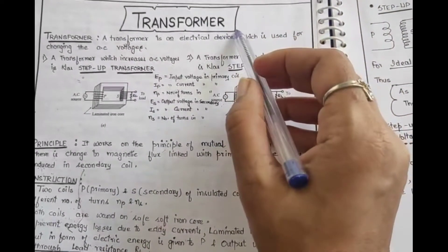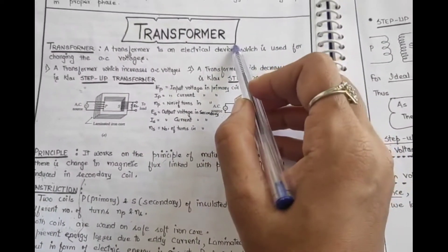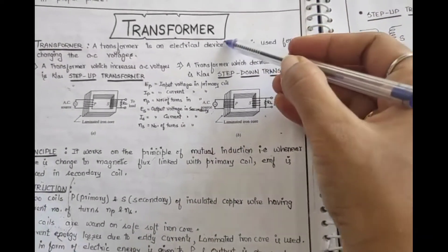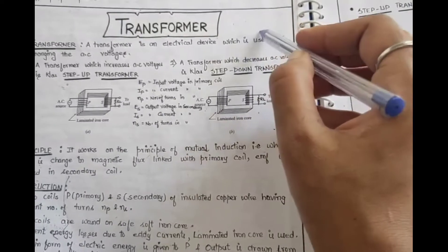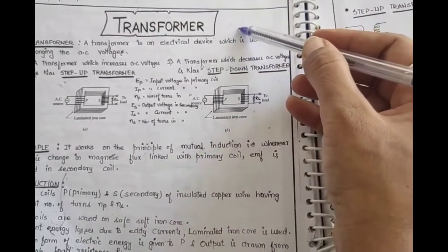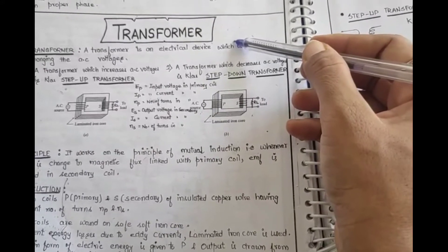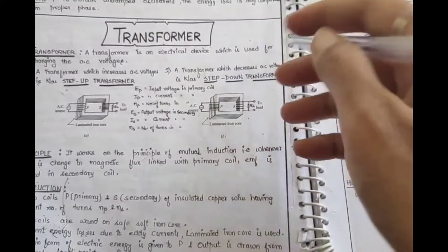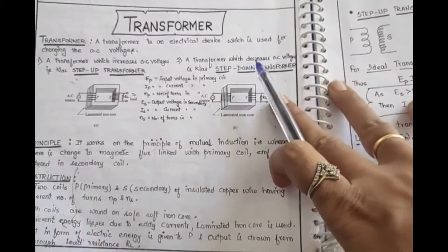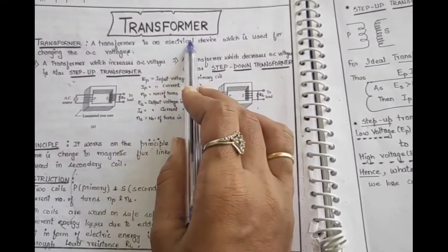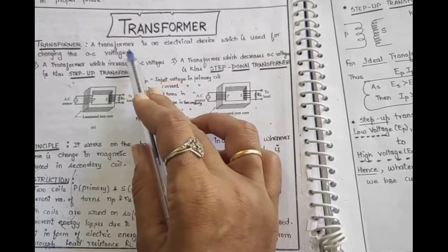Hello students, this is video number 8 and we will discuss one of the important topics that is transformer which is repeatedly asked in board exam in 3 or 5 marks. If it comes with a numerical, it comes in 5 marks and if it is direct in the form of an article, then it comes in the category of 3 mark question. So this is the easiest topic and this will finish this unit.